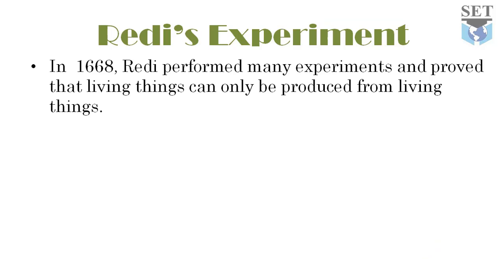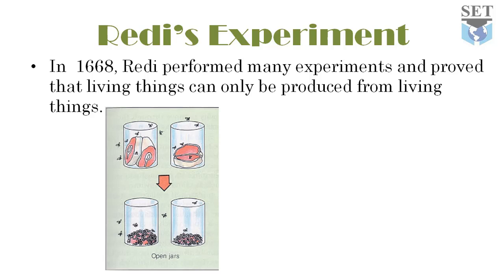For his first experiment, Redi put some dead snakes in a wide-mouth jar. Flies gathered around the dead snakes, and after three days maggots appeared. After 18 days, these maggots transformed into pupae. Some pupae were then transferred to a separate glass container covered with a sheet of paper. Eight days later, every pupa had emerged as a fly — all similar to those which had visited the dead snakes. He concluded that the maggots were born from flies that came to the dead snakes.